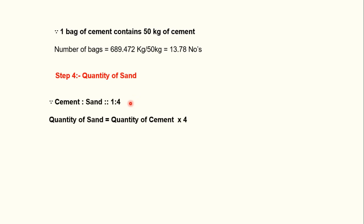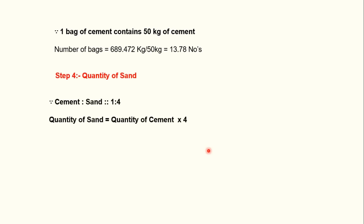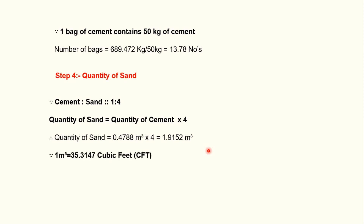Now for the quantity of sand. Since cement and sand are in the ratio 1:4, quantity of sand equals quantity of cement multiplied by 4. Therefore quantity of sand equals 0.4788 × 4 = 1.9152 cubic meters. Since 1 cubic meter equals 35.3147 cubic feet, we can also express this in cubic feet.